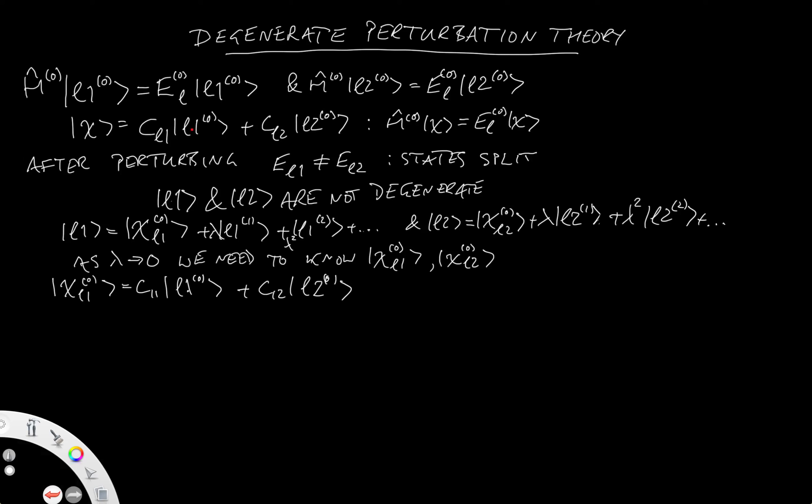And once we've done that, so let's just actually write that out explicitly. So chi_L2 of 0 is equal to C21 L1 of 0 plus C22 L2 of 0. So we're making these linear combinations. We're assuming that we know what they are, and those are going to be the states that the system reverts to when we remove the perturbation.